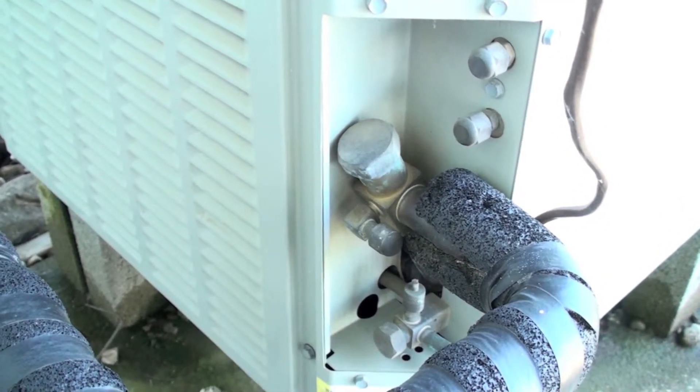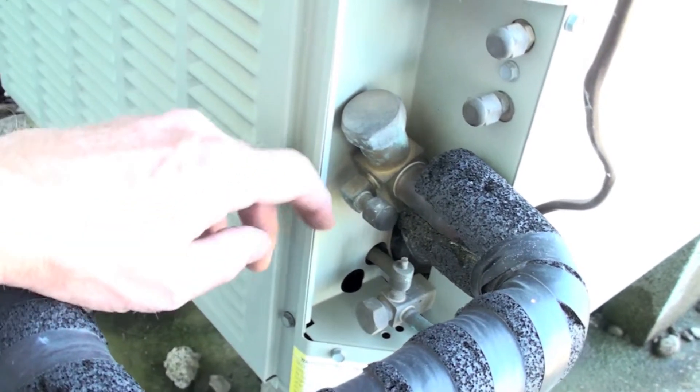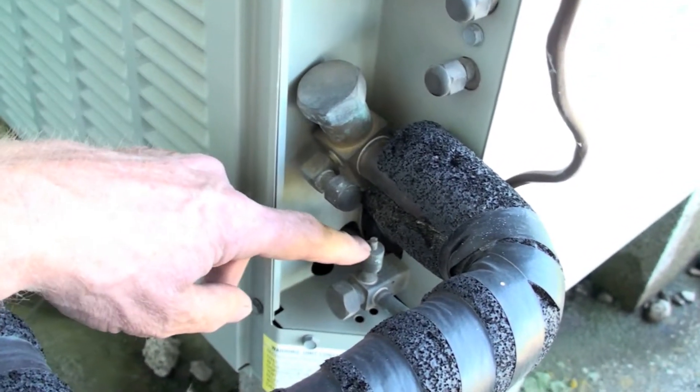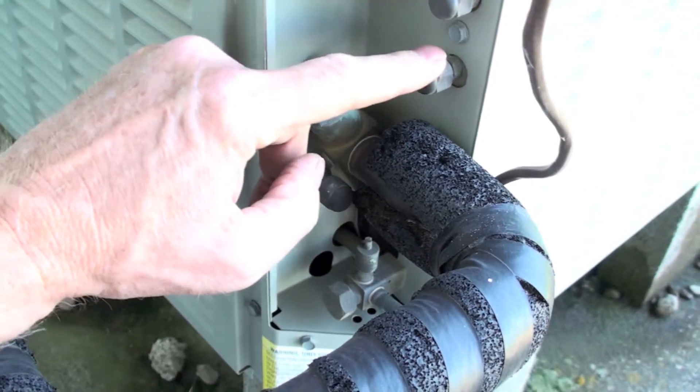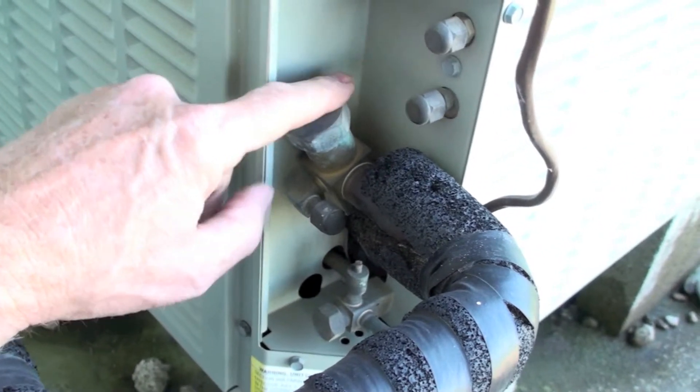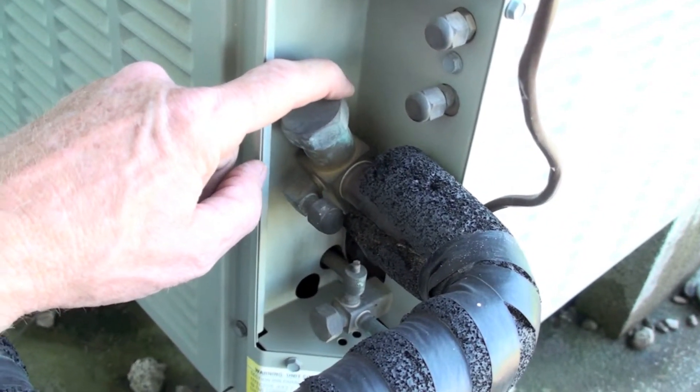Okay, here we're looking at the service taps. This is a line set tap here, line set tap here. Here's a couple of internal service taps. Because this is a heat pump, this is a service valve—the suction service valve.